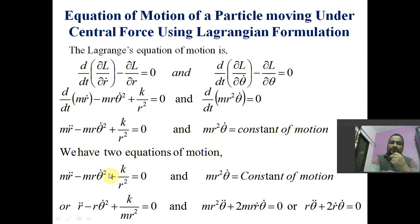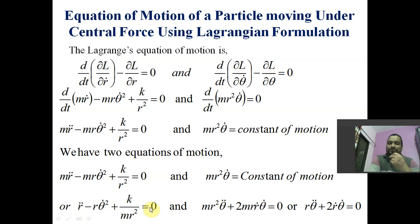We therefore have two equations of motion. The first is m r-double-dot minus m r theta-dot squared plus k upon r squared equal to 0. The second is m r squared theta-dot equal to constant. The first equation can also be written as r-double-dot minus r theta-dot squared plus k upon m r squared equal to 0.